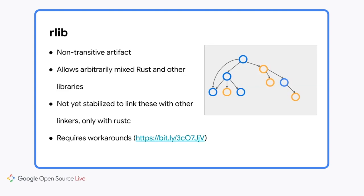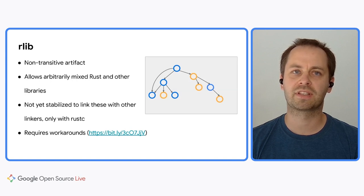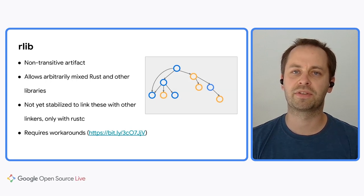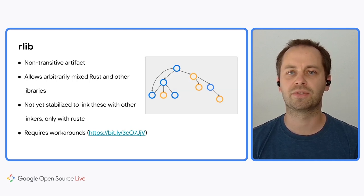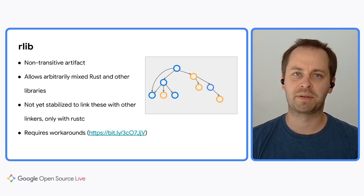With StaticLib and Cdylib, there is an additional bundling step before linking. There is a wrinkle though: the Rust compiler doesn't generate code for all the symbols used in these libraries. For example, code for certain memory allocator functions is generated by the Rust compiler only when producing a binary, a StaticLib, or a Cdylib. If you want to use RLibs in your build graph, you have to explicitly provide definitions for these functions — and each time the Rust compiler changes some implementation detail, you have to update your workaround. There are people working on stabilizing RLibs and on-demand generation of allocator functions. And with that, I give this back to Dimitri.